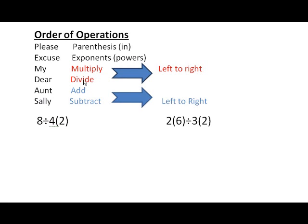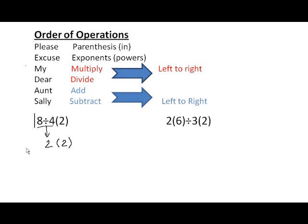Next is multiply and divide — you have to do both at the same time, from left to right, as though you're reading a book. You do the first multiply or divide you come across. 8 divided by 4 is the first one, and 8 divided by 4 is 2. Then bringing everything else down, we have 2 times 2, and 2 times 2 is 4.